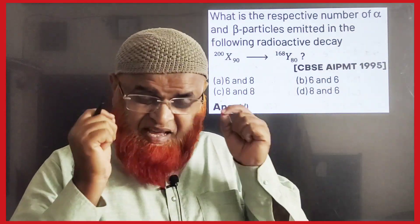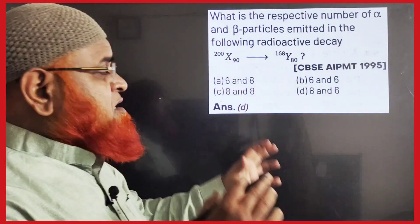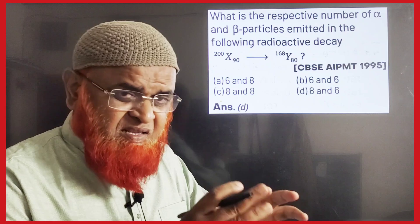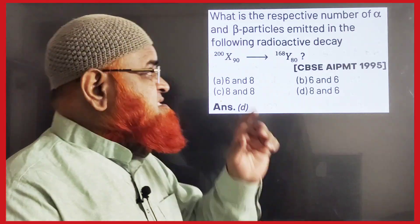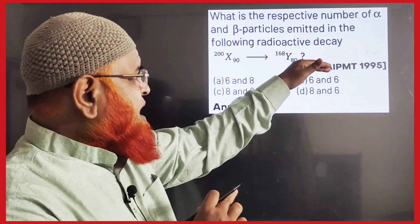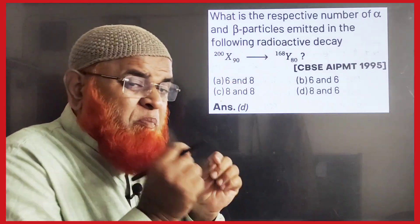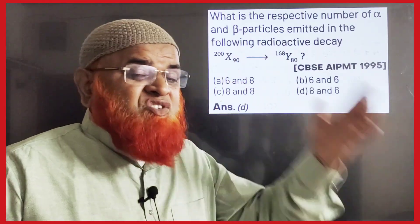My dear friends, the effective and exactly accurate method to find out the number of alpha particles released and number of beta particles released when an element X converts into Y having different mass number and atomic number. So how many alpha and beta particles have been ejected out?